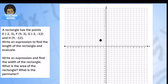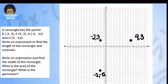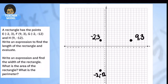Our first point E is at negative two, three — left two, up three. Point F is at nine, three — right nine, up three. Point G is at negative two, negative twelve — left two, down twelve. Our last point H is at nine, negative twelve — right nine, down twelve. Let's connect these points together to reveal the rectangle.